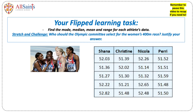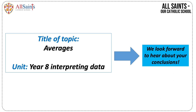For your flipped learning task, find the averages and the range of the times for each athlete. By comparing your averages and ranges, select the athlete you have chosen to participate in the Olympics. You may want to also research the advantages and disadvantages of each type of average to help you justify your answer. We are excited to see your conclusions to the flipped learning task.